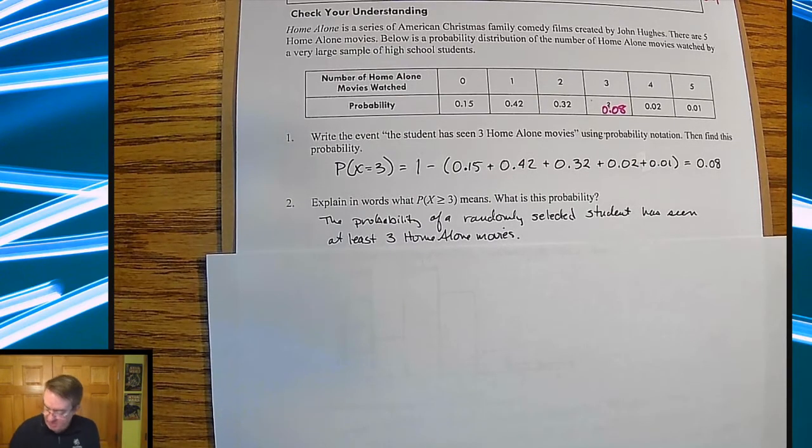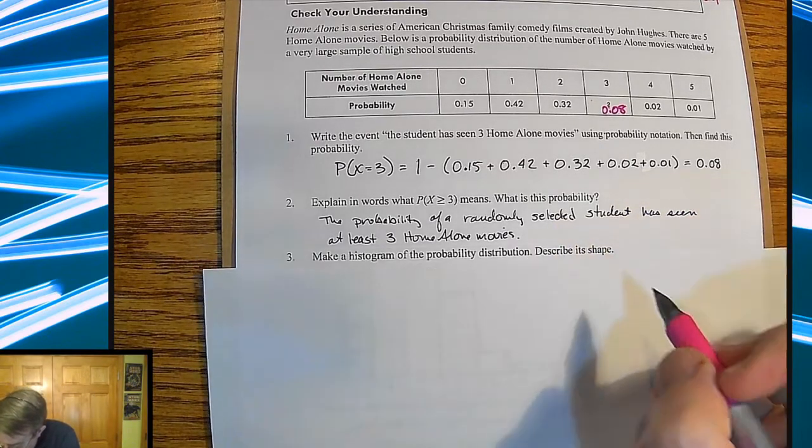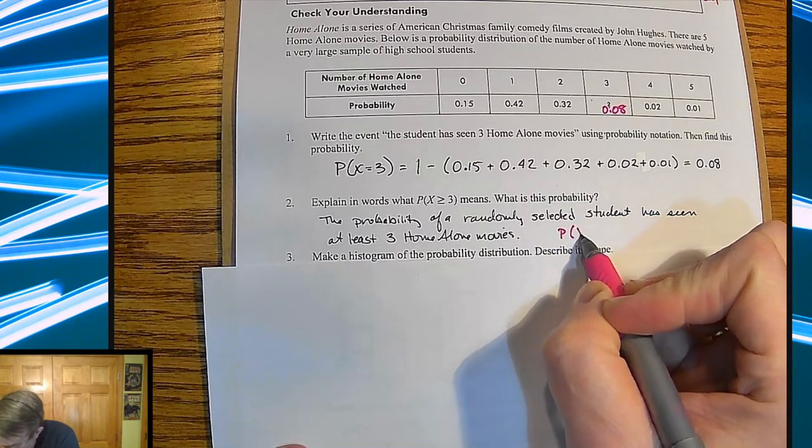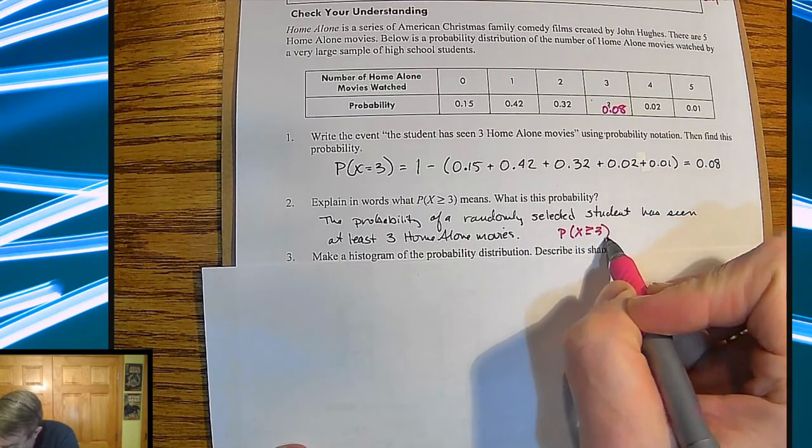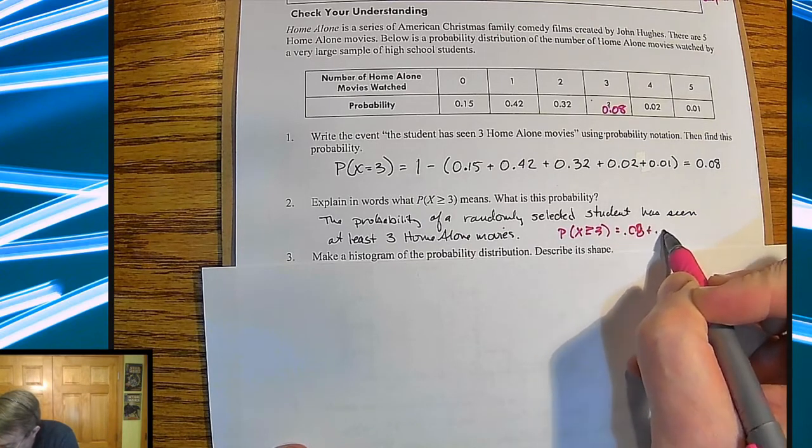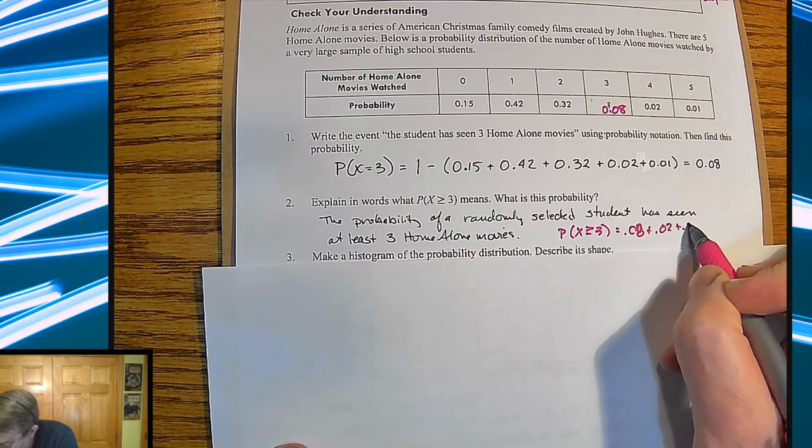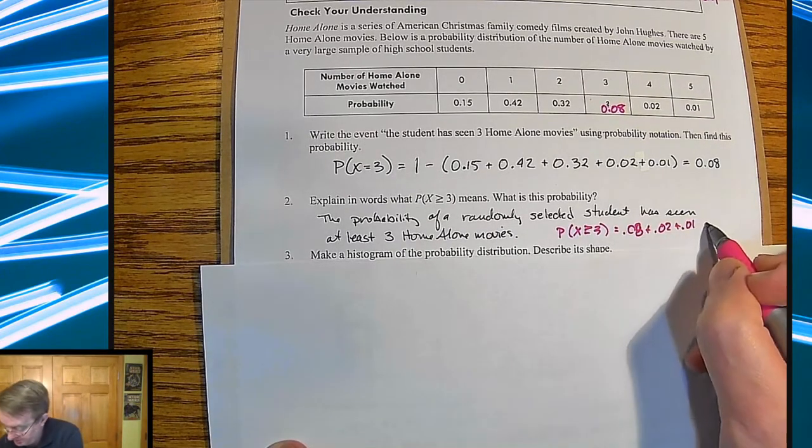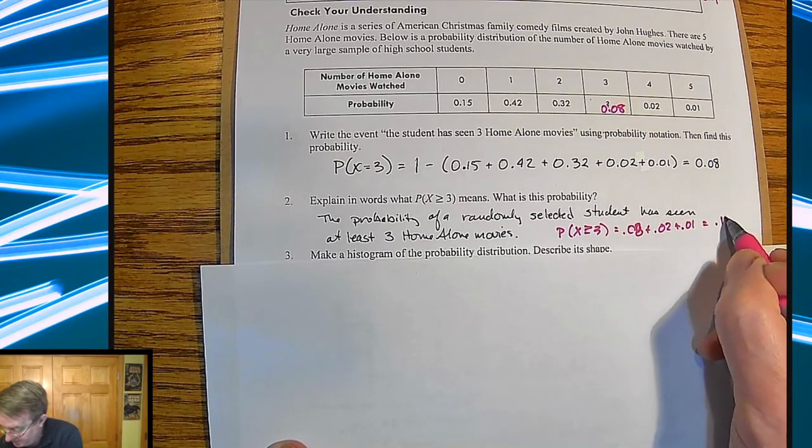So that would end up being the probability of X is greater than or equal to three, which is going to be 0.08 plus 0.02 plus 0.01. Back in the old days, we would say 8 hundredths, 2 hundredths, and 1 hundredths, very grand total of 11 hundredths.